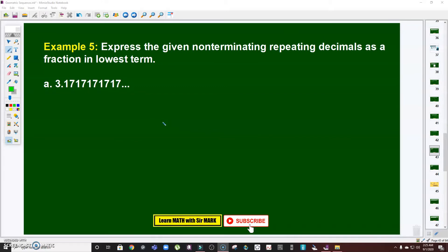So if you're ready, let's begin. Problem number five: express the given non-terminating repeating decimals as a fraction in lowest term. 3.171717 and so on.